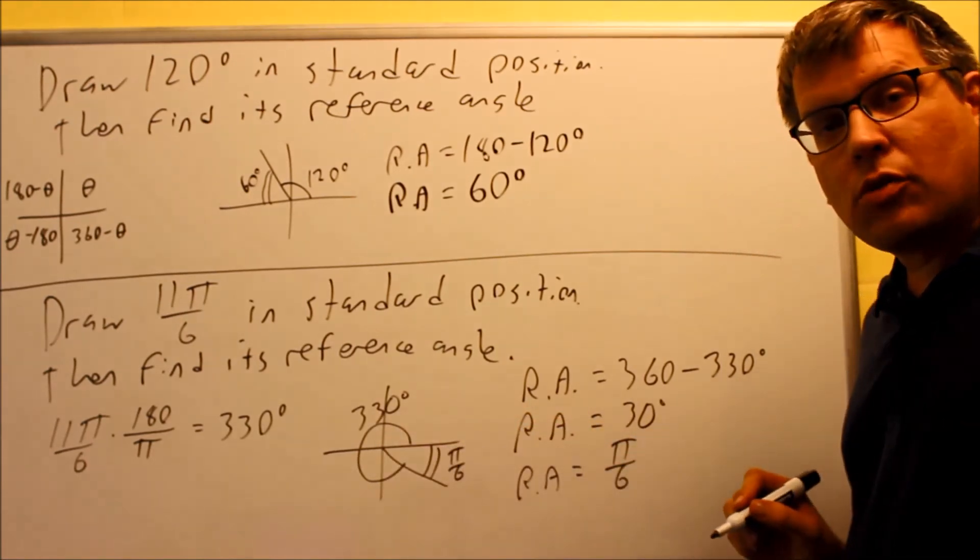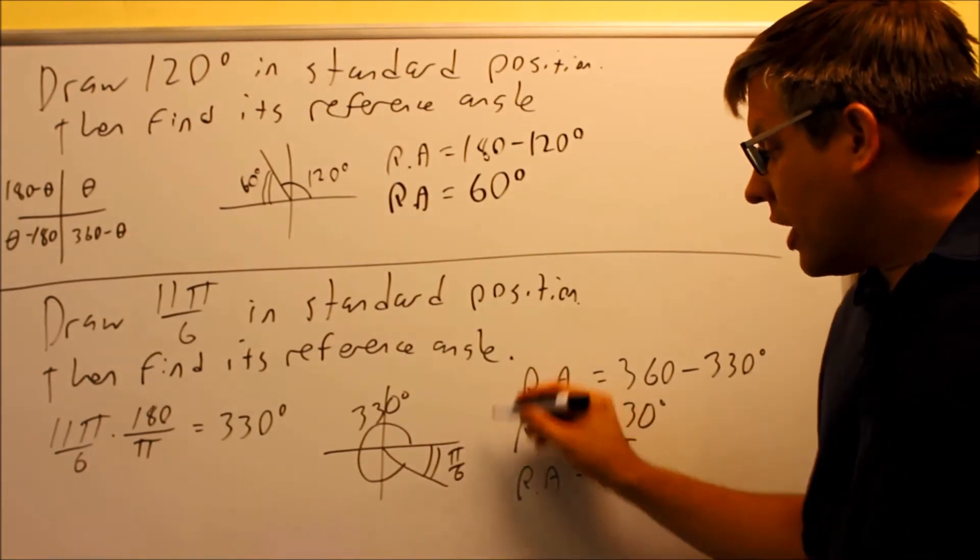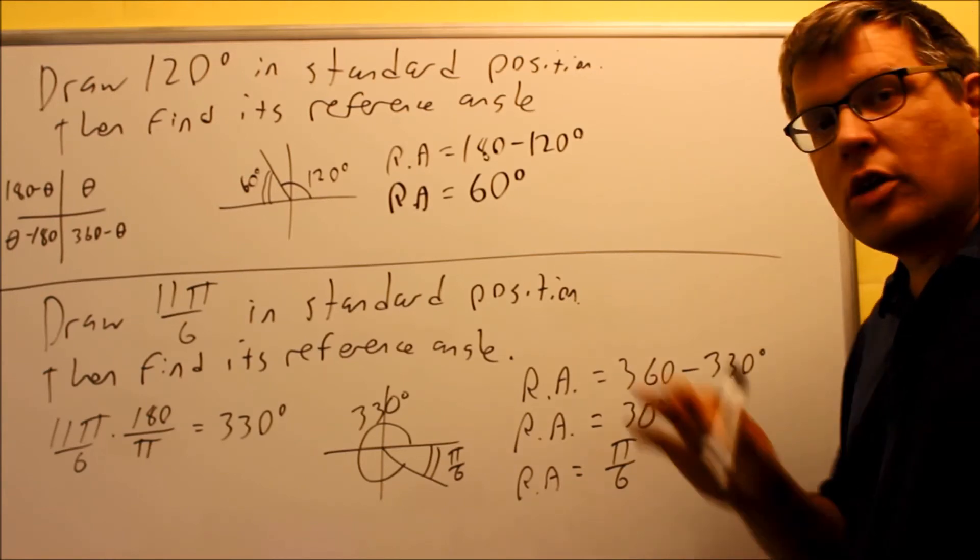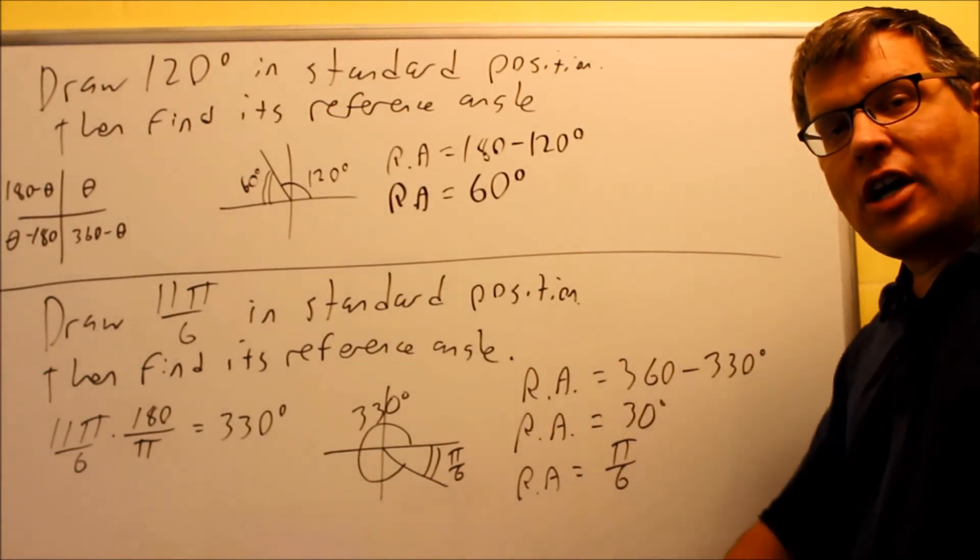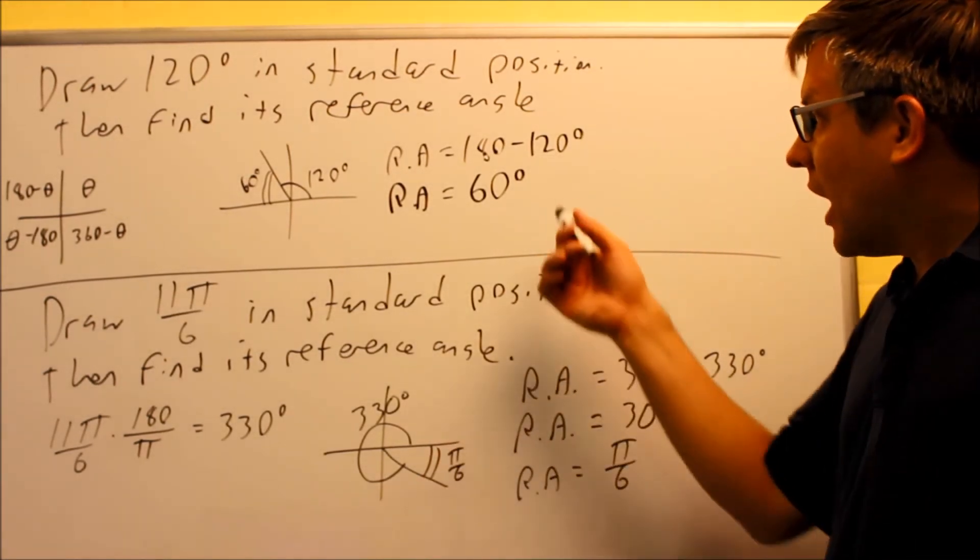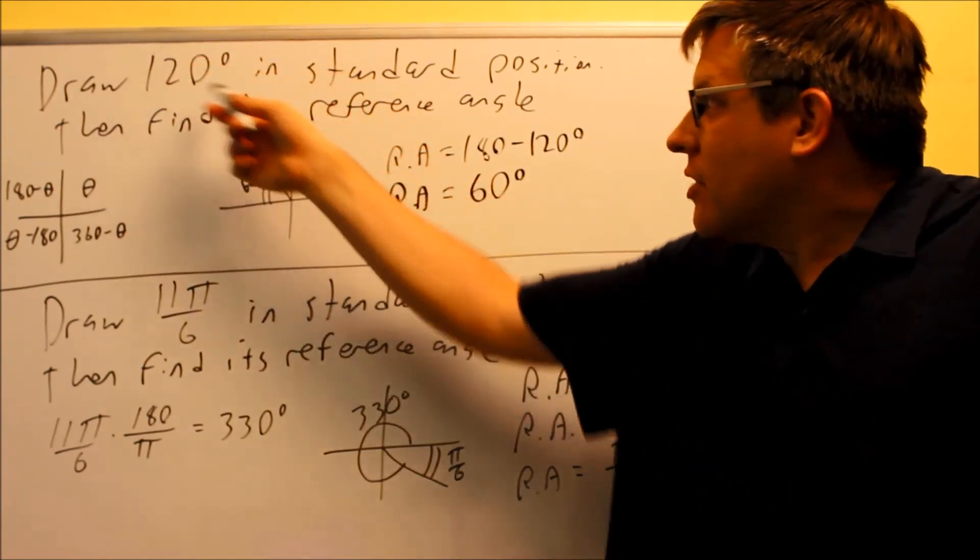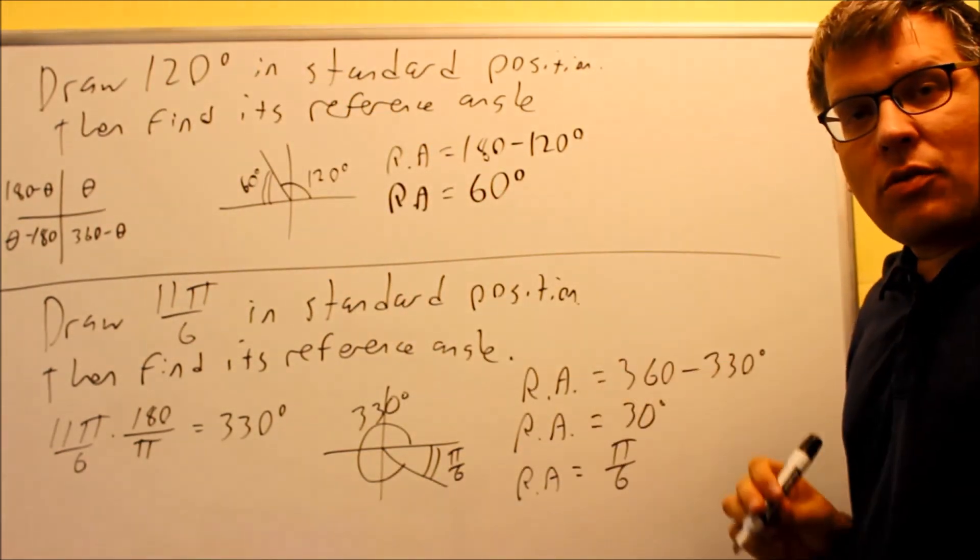Going all the way around the other way would be 330. So now that we've taken a look at this, we're going to move on to how do you apply a trig function. So we would have a trig function applied to one of these angles.